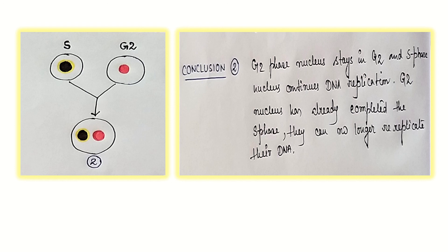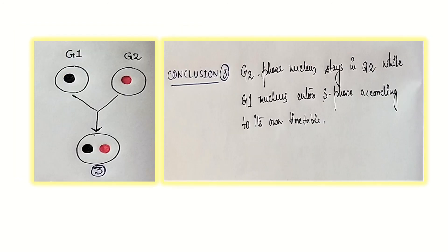Then finally, we go to the last one, last diagram. Here what we do, two cells again are chosen, one from G1, the other from G2. They are fused. What is the result? What is the observation?